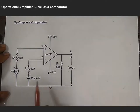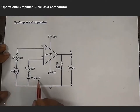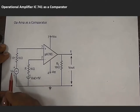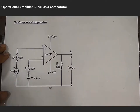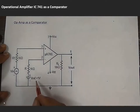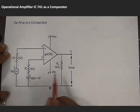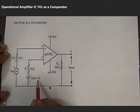Basically, in a comparator, the reference voltage is compared with the input. Suppose reference is 1 volt DC - that means plus 1 volt maximum. If the input voltage crosses 1 volt maximum, only then output will appear. If it is less than the reference, output will not appear.